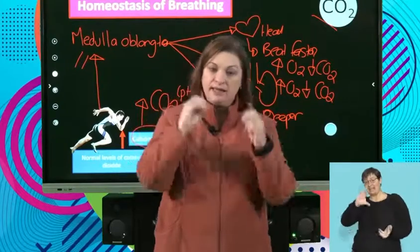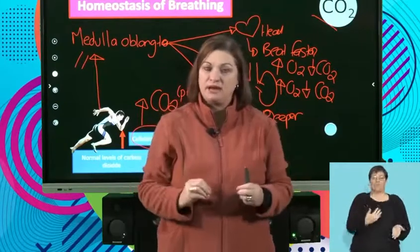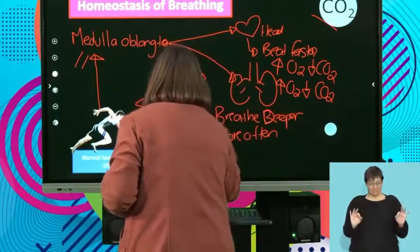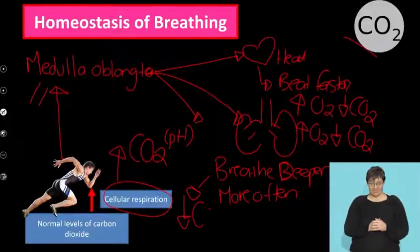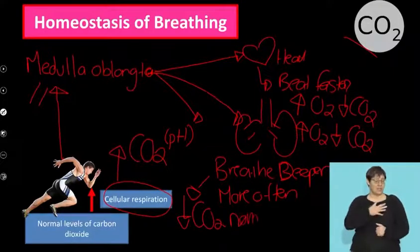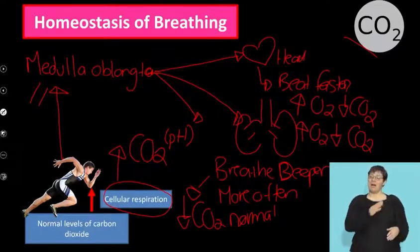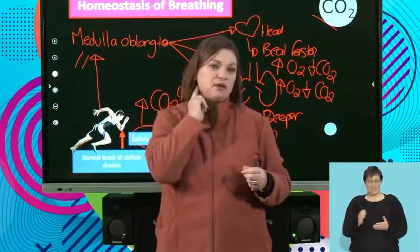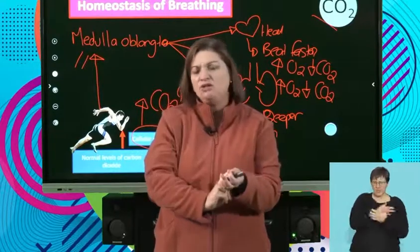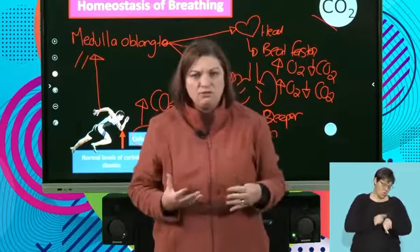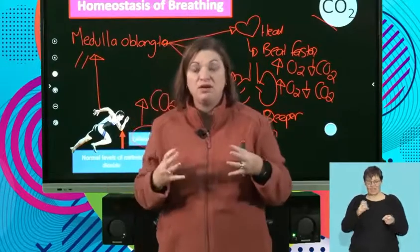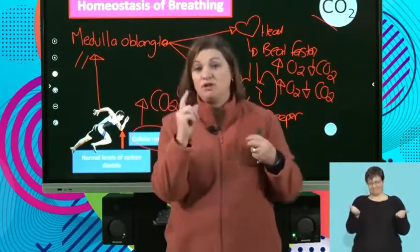Then after a while, what happens when the levels equalize — when my carbon dioxide gets back to normal? My breathing gets back to normal, and my heart rate gets back to normal. Some of you might train using your heart rate monitor, and that's exactly how this works. That is homeostasis — that is how my body makes sure it gets rid of the excess carbon dioxide.